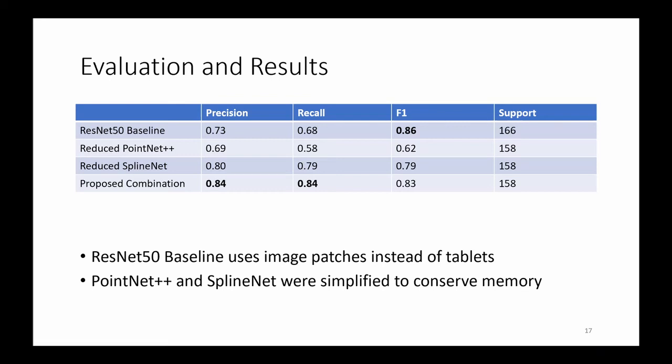Our network takes the complete surface into consideration, instead of randomly chosen projections of it. From the two approaches we base our work on, the convolutional operator of SplineNet does most of the heavy lifting. We predict the period of origin to an accuracy of more than 80 percent, given only the geometry and without extracting wedges or performing any linguistic analysis.